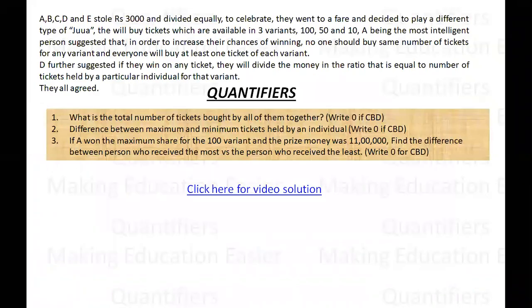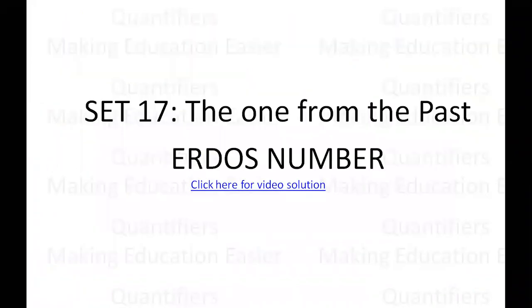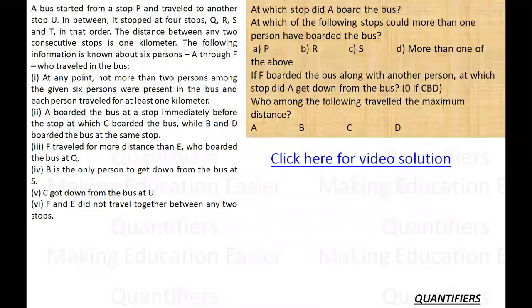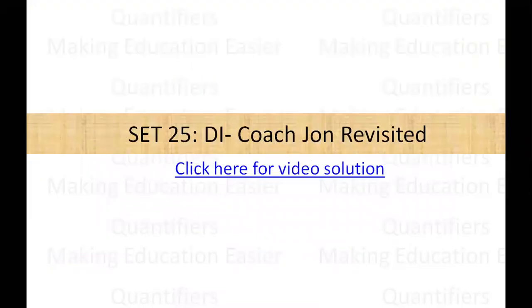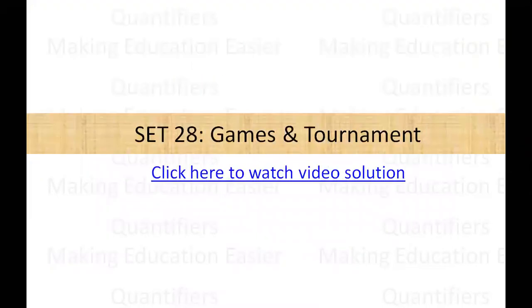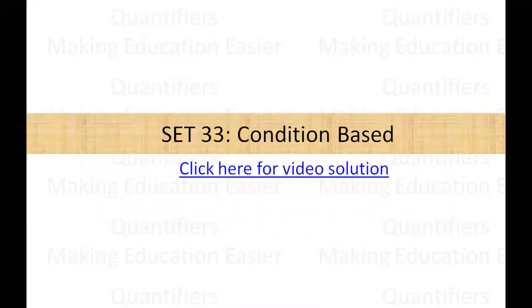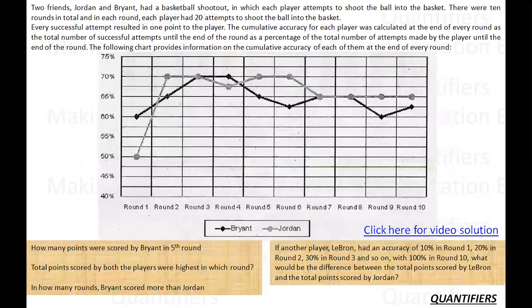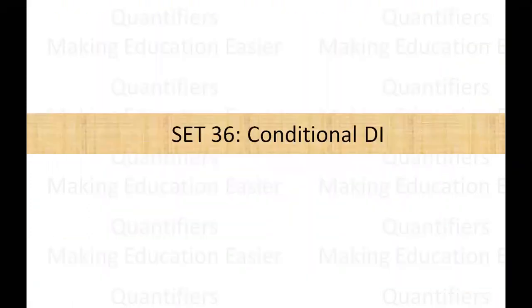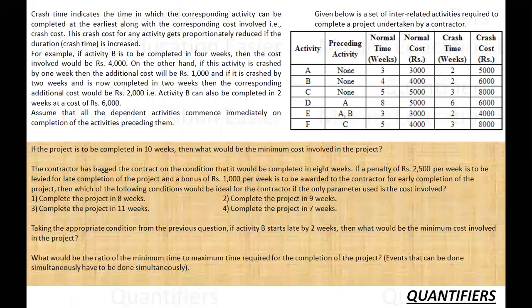We are doing this series for a month; the whole playlist is given in the description box. Some sets are directly from the CAT and some are new. This is our new set — we call it Conditional DI. Let's see what this set talks about.